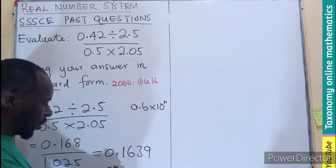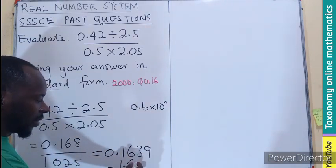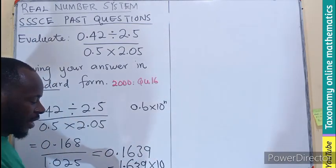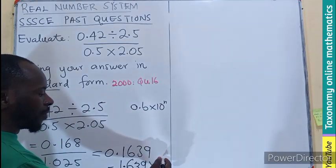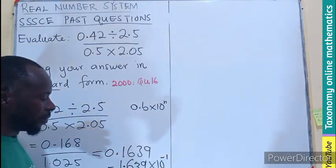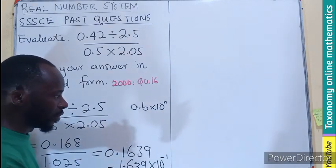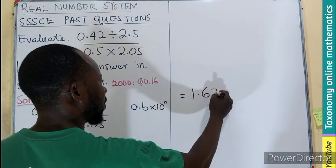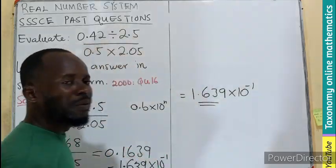So we move one place. This is going to be 1.639 times 10 to the power. If you move the point from left to right, the exponent becomes negative. We're moving only one place, so that becomes negative 1. This is 1.639 times 10 to the power of negative 1.